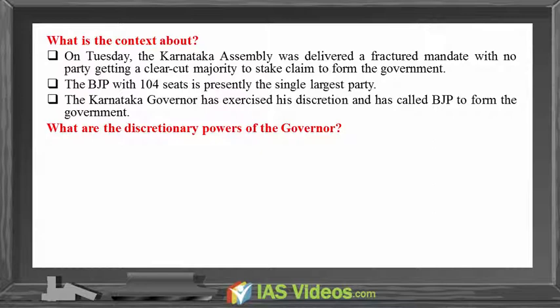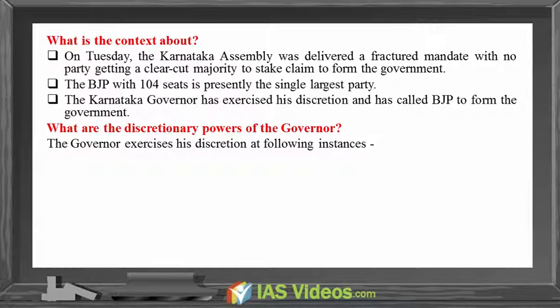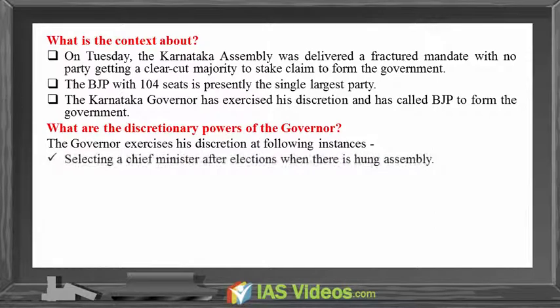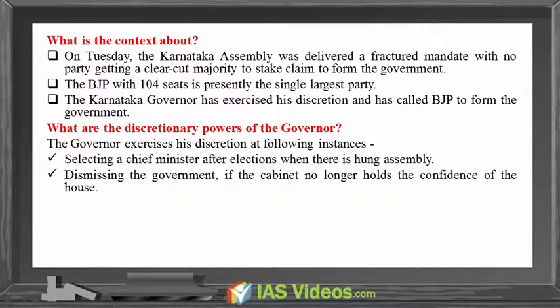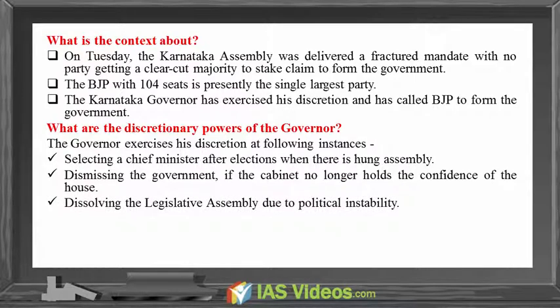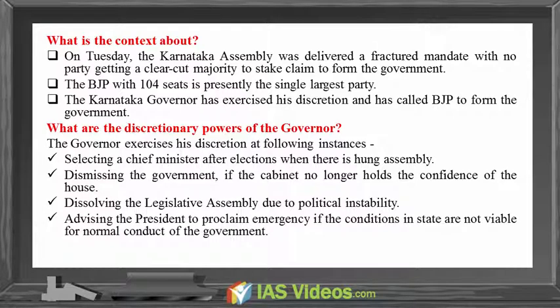What are the discretionary pathways of the governor? The governor exercises his discretion in the following instances: selecting a chief minister after elections when there is a hung assembly; dismissing the government if the cabinet no longer holds the confidence of the house; dissolving the legislative assembly due to political instability; and advising the president to proclaim emergency if conditions in the state are not viable for normal conduct of government.